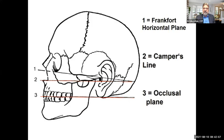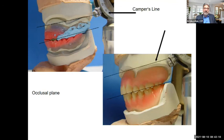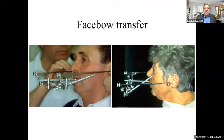We look at the Frankfurt horizontal plane, Camper's line, and the occlusal plane. Camper's line is equal to the occlusal plane. On average, the lower is 18 to 20 millimeters from the periphery to the incisal edge, and 20 to 22 millimeters on the upper. By registration is one of the most important aspects of the case, right alongside the impression.